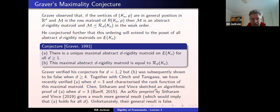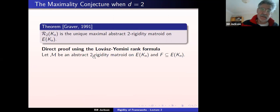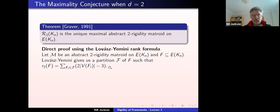Let's go back to Graver's original proof that his conjecture is true for d equals one and two, because it's closely related to the proof by myself, Kirtley, and Shinichi. I'll start by trying to relate it to the Loomis-Whitney rank formula. Let's give a direct proof using the fact that we know the rank formula for two-dimensional rigidity. What we're going to do is show that the rank in this matroid is greater than or equal to the rank in any other abstract rigidity matroid.